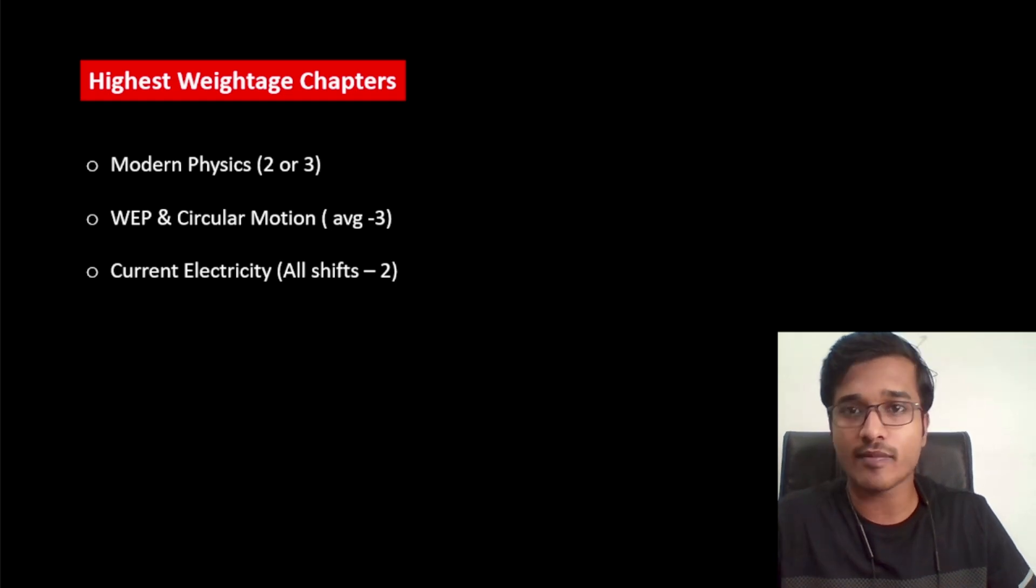So first, if we have 2 or 3 questions in each shift, then work energy power and circular motion - if we combine work energy power and circular motion, there are 3 questions here. In 3 shifts there were 3 questions, and in 1 shift it was less than 3. So in this way, this is also an important topic. Then current electricity - 2 questions are fixed in each shift. So these 3 are coming in high-weightage chapters.